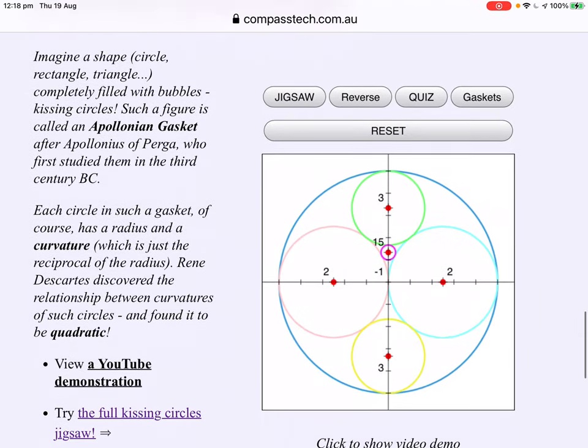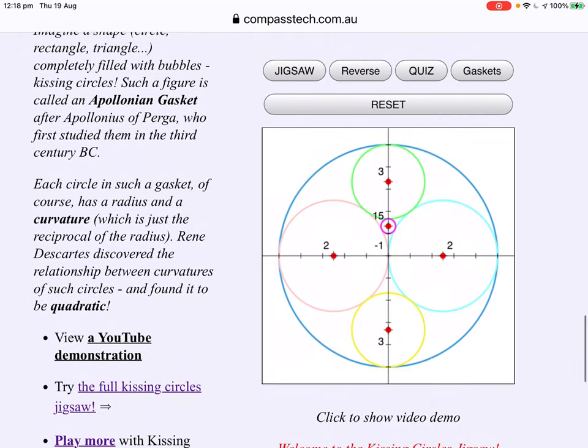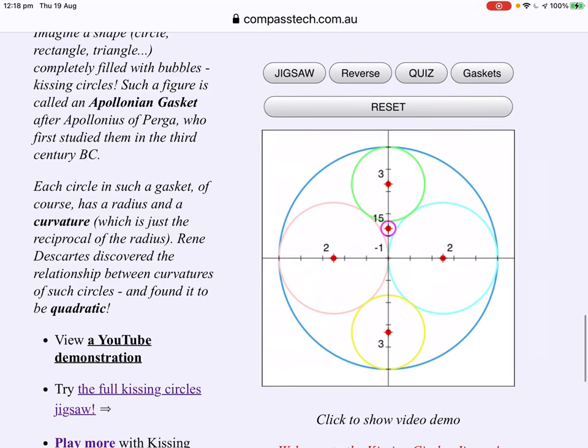Our third jigsaw is about kissing circles, or more formally, Apollonian gaskets. Now, the circles that fit together to fill a space, turns out, number theory.